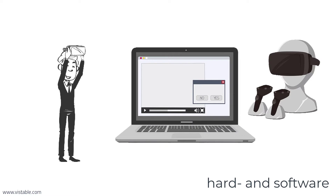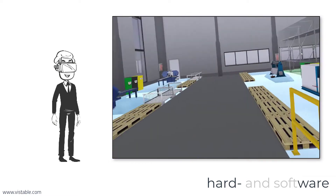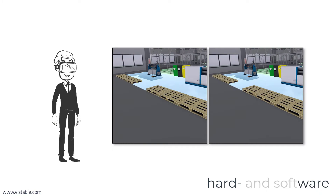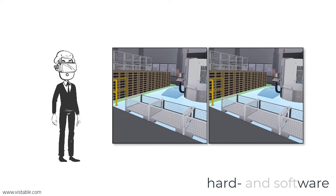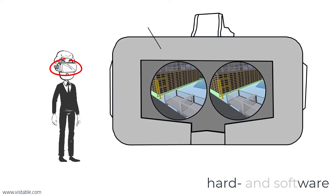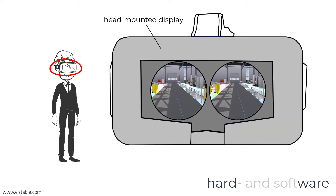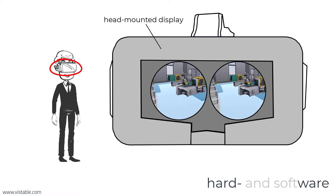For virtual reality you need special hardware and software. The virtual reality hardware basically has to fulfill two functions. The first function is simply the display of your planning solution. The display must be stereoscopic so that the three-dimensional impression and thus the desired immersion is created. So-called head-mounted displays are best suited for this purpose. With head-mounted displays, the representation is projected directly in front of the eyes.